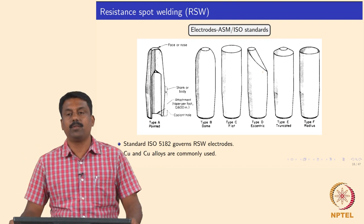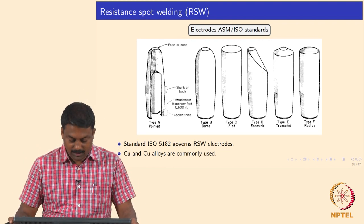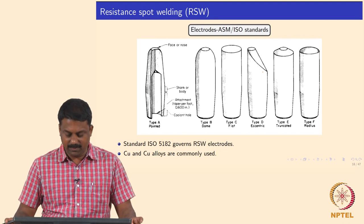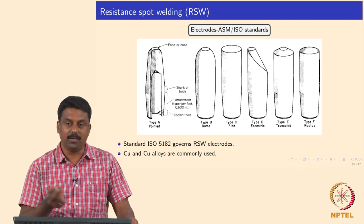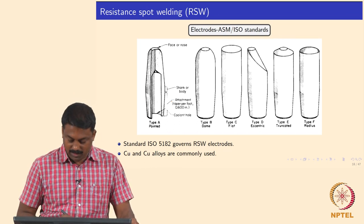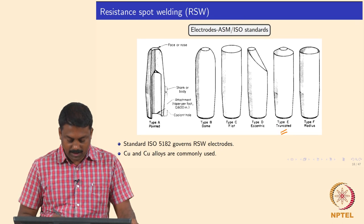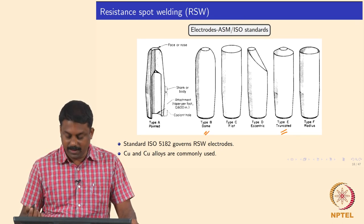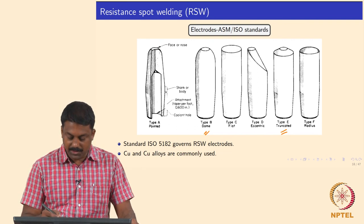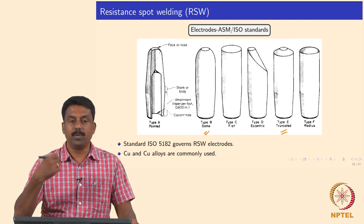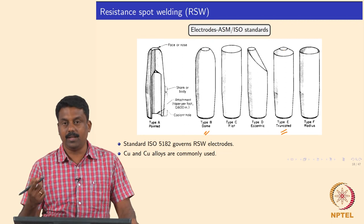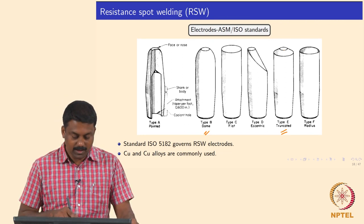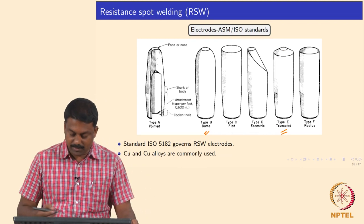Regarding electrodes, there are about 6 to 7 types nowadays. The most commonly used electrodes are type E and type B. Based on the needs, you can choose the electrode type. You can also change the electrode diameter from top to bottom, which is very useful for certain applications. The cross section shows a channel for water cooling — water flows through to cool the electrode.